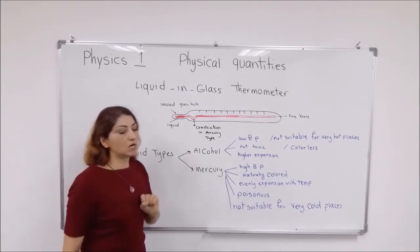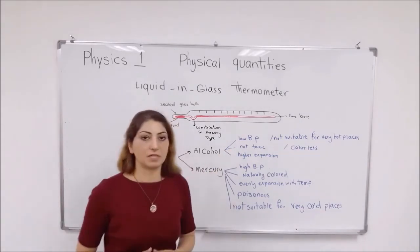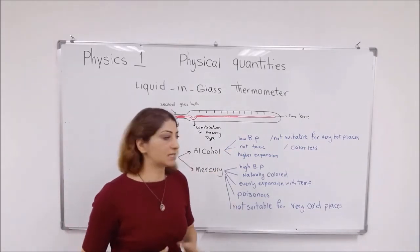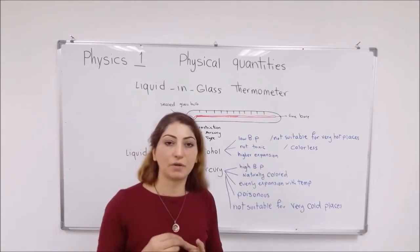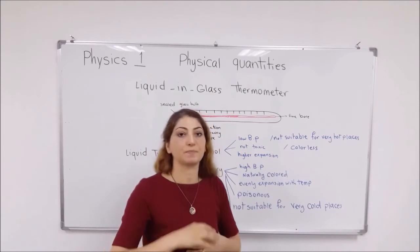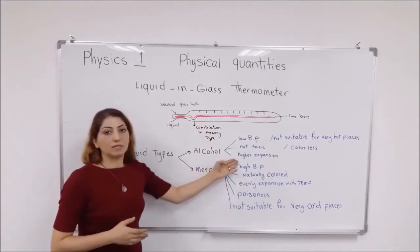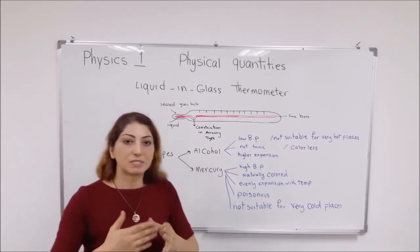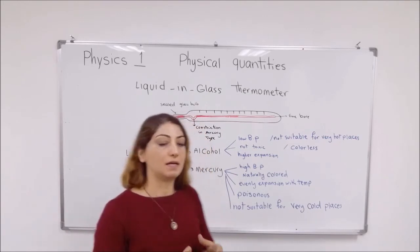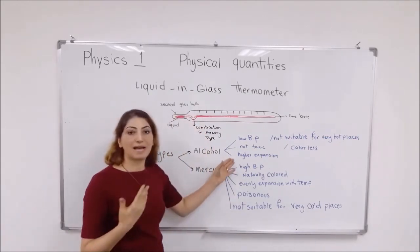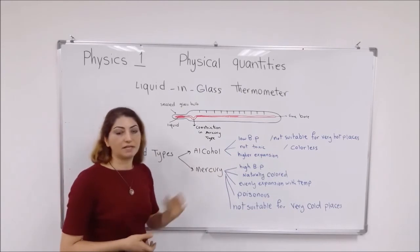So alcohol thermometers, they are not toxic. This liquid is not toxic. And it is colorless, so you have to add dye or color so that it can be seen easily. Another property of alcohol, it has a very higher expansion, six times higher than mercury. So it is another advantage about alcohol used as a liquid in the thermometer.